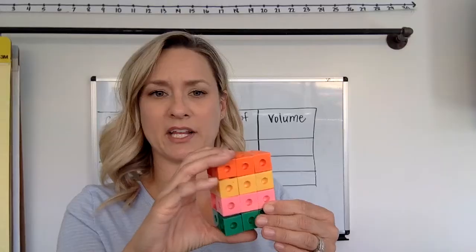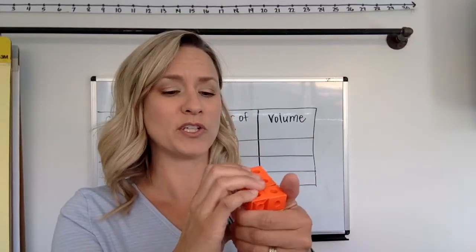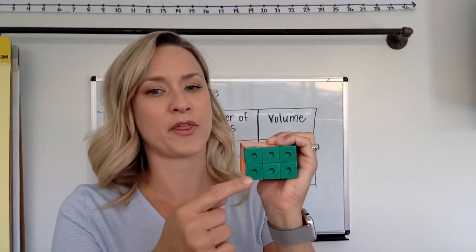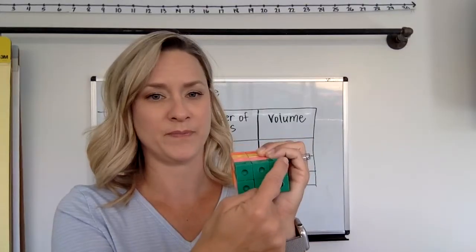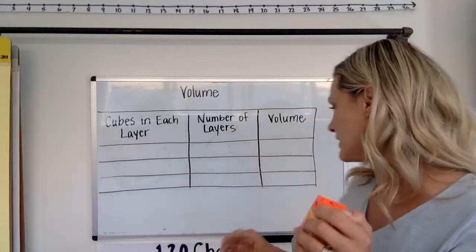You might notice that I'm not saying 3 times 2. When we're talking about volume, we always switch that multiplication sign to the word 'by'. So it's a 3 by 2. We know that each layer is made up of a 3 by 2 in this rectangular prism.